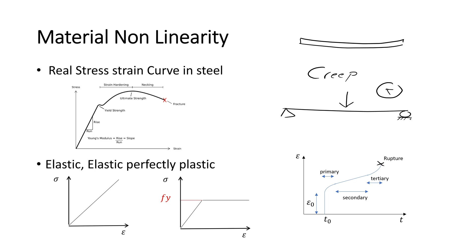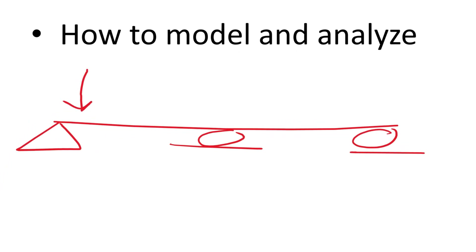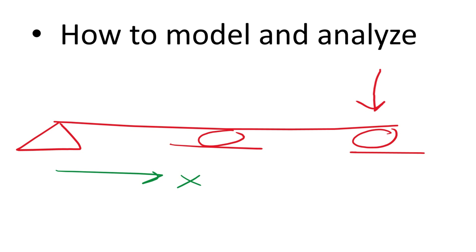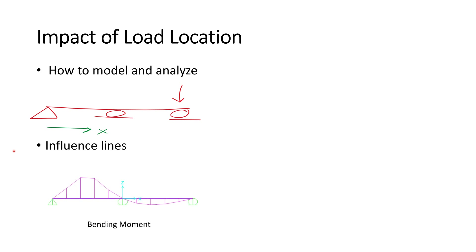Now let's discuss the impact of load location on the structural response. How is it possible to identify the most critical load location in a beam? One way is to place the load at different locations across the length of the beam and with each step find the internal forces in the beam, then extract the location that generates the highest response. This approach is very time consuming and can be cut down significantly by the use of influence lines. Influence lines can be generated by hand, but this is only possible if the structure is statically determinate. If not, the use of finite element software is required to generate influence lines.